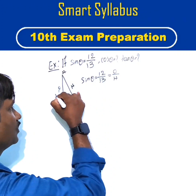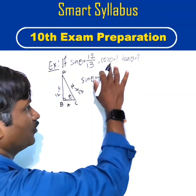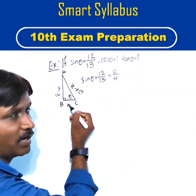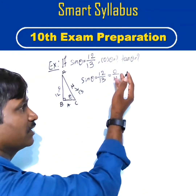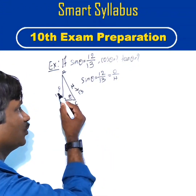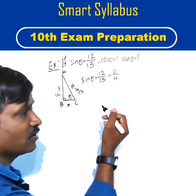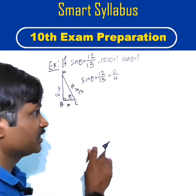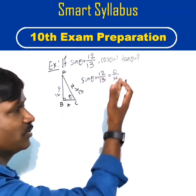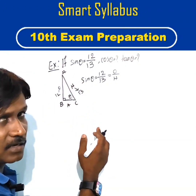Since sine theta = 12/13, the opposite side is 12 and the hypotenuse is 13. The formula for cos theta is adjacent side upon hypotenuse, and tan theta is opposite upon adjacent. In both cases, we need the value of the adjacent side first. So let us find the adjacent side before computing cos theta and tan theta.